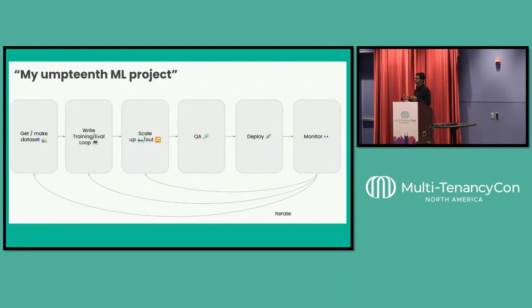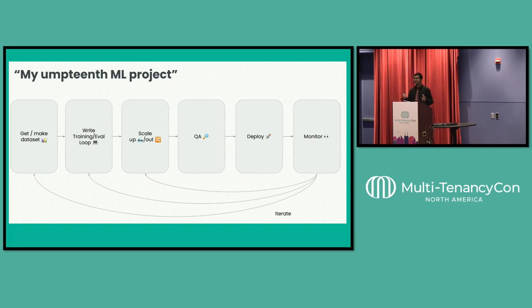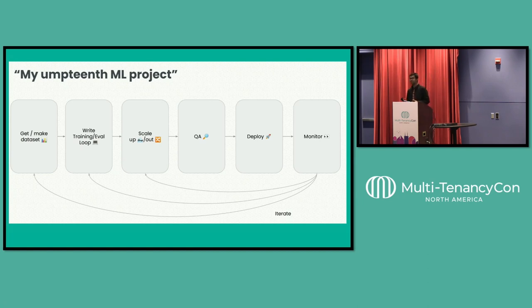For those who might not be aware, since this is a MultitenancyCon and not a machine learning conference, let me give a quick recap of what happens in an end-to-end machine learning lifecycle. You start by taking some data and training it. You then start a training cycle where you take that processed data and try to create model artifacts. Then you validate whether the model's performance is good and gives accurate results, and if it does, you push it into production.